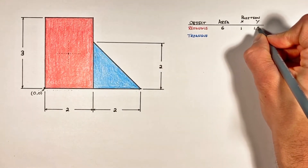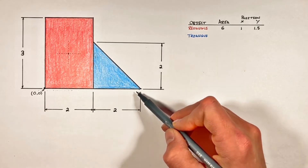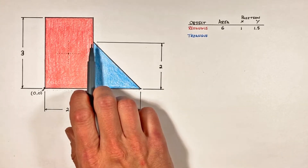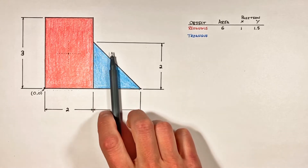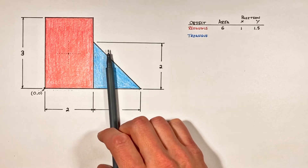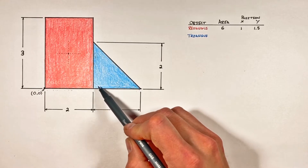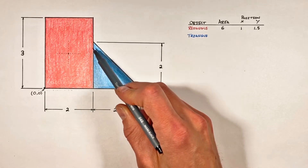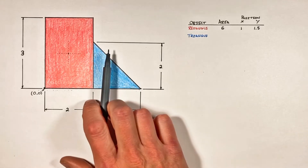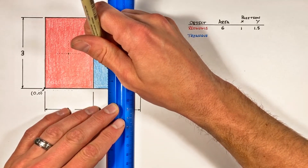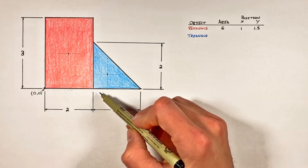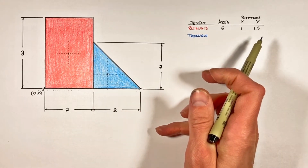Moving on to the triangle, things get a little bit trickier. The center of area of this triangle does not lie halfway between the left and right side. If you divide the triangle in half, there's much more material on the left side than on the right. However, it can be derived that the center of mass or center of area of a triangle lies one third of the distance from the long edge along that axis. If you want to see the derivation, click up here.